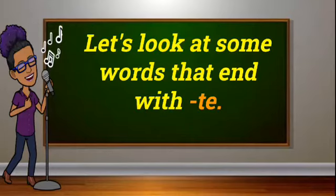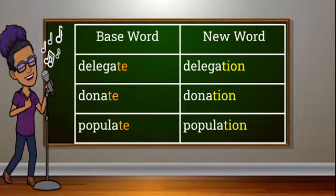So let's look at some words that end with T-E. Here we have our table showing our base words and new word with the suffix -tion. Base words ending with T-E.